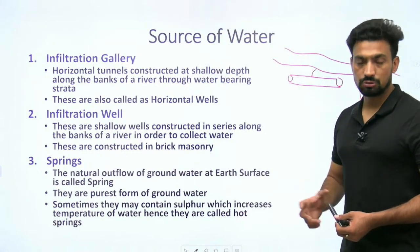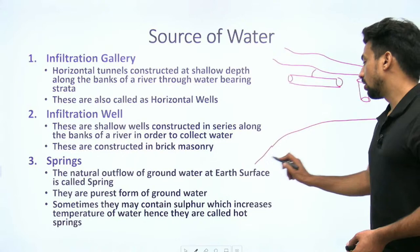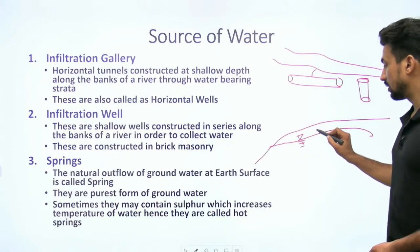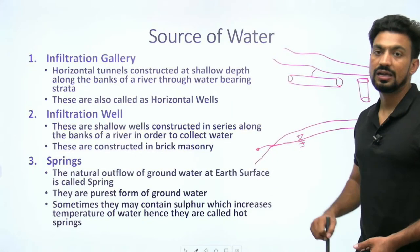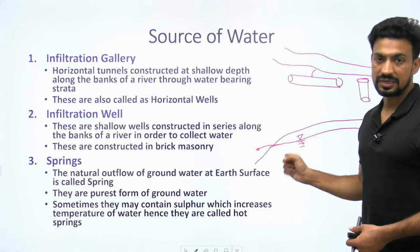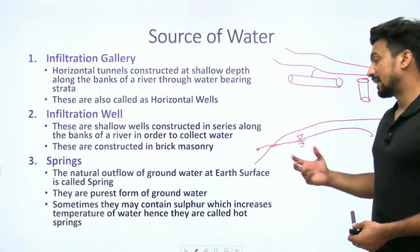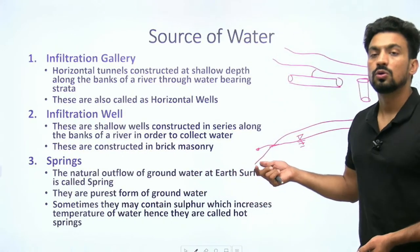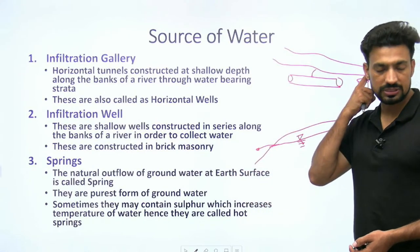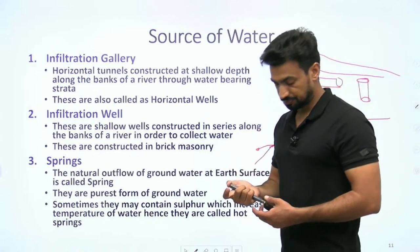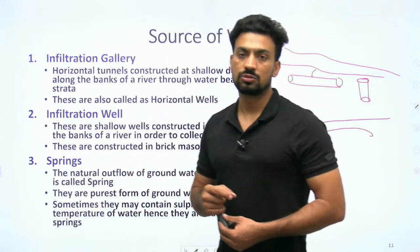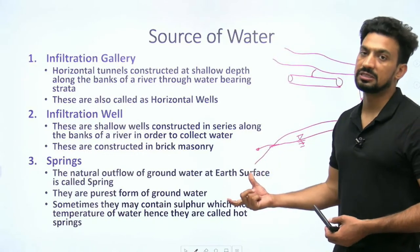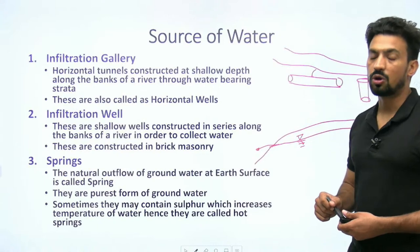Springs भी water source हो सकते हैं। किसी particular location पर अगर ground water table किसी जगह से ground से बाहर आ रही है - जरने या spring के form में - तो वहां से पानी extract किया जा सकता है। इस पानी में sulfur भी हो सकता है क्योंकि यह soil के through आता है, जिससे उसका temperature ज्यादा होता है। Scientifically उनमें sulfur की quantity होती है जिससे temperature ज्यादा होता है - इन्हें hot springs कहते हैं।